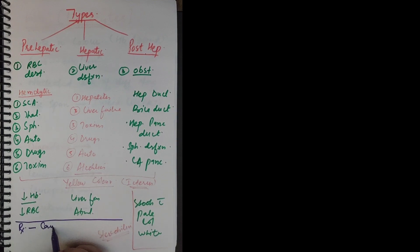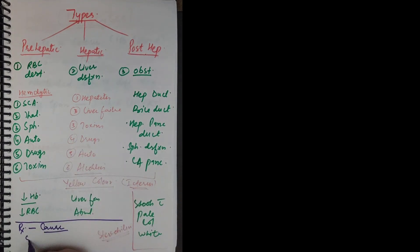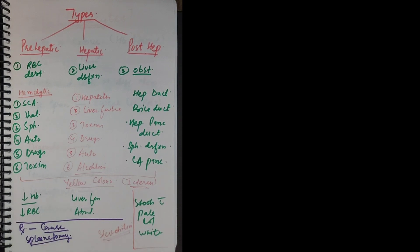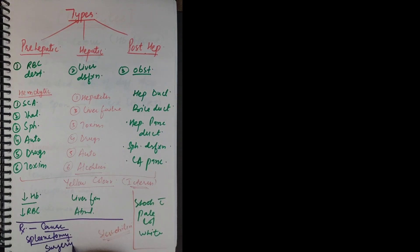Treatment depends upon the cause. If there is excessive hemolysis and it is due to a genetic disorder in the RBCs, we need to do a splenectomy — remove the spleen — because the spleen is a major organ that destroys RBCs. If it is hepatic dysfunction, we need to cure hepatitis and give supporting drugs. If it is post-hepatic or obstructive, we may need to perform surgery.